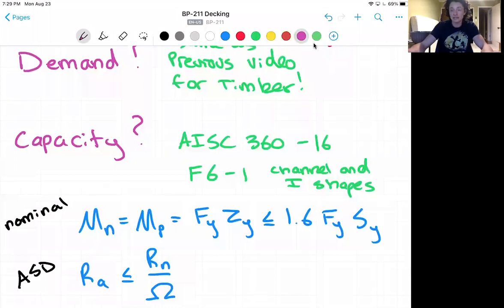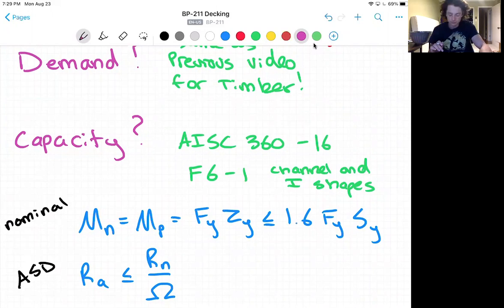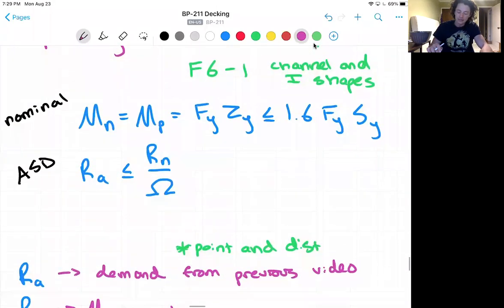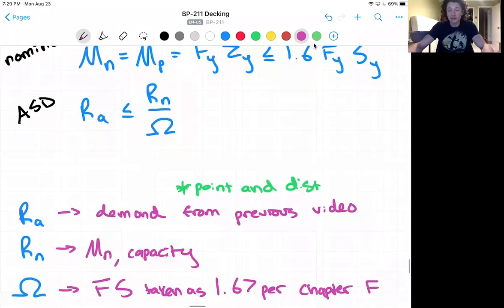Now for the ASD design in the steel manual we see this general equation you've seen before: RA is less than or equal to Rn over omega in which RA is our demand.